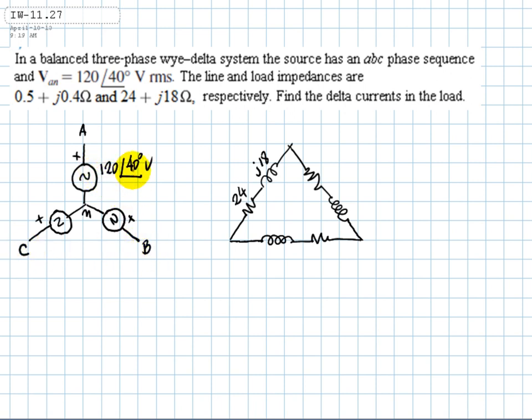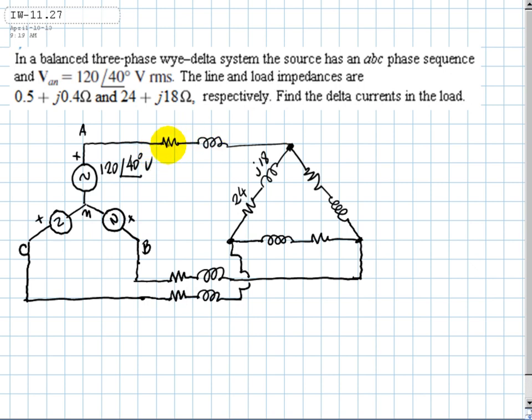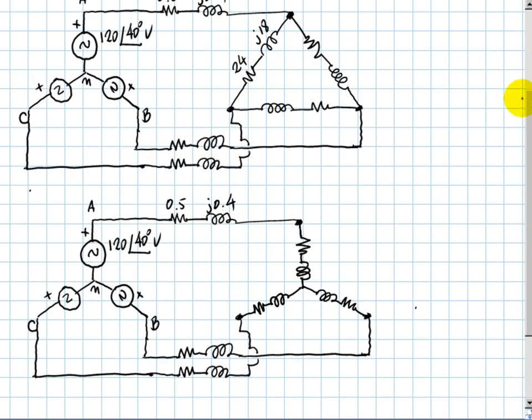The sequence is 40 minus 120 degrees and 40 plus 120 degrees for phase C. But now we join them together. The line has an impedance - it's this small impedance and we have to draw that too. The impedance of that line is 0.5 ohms plus j0.4 ohms.